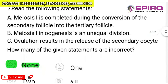Question 7: read statements A, B, and C. Meiosis I is completed during conversion of secondary follicle into tertiary follicle. Meiosis I in oogenesis is an unequal division. Ovulation results in the release of the secondary oocyte. How many statements are incorrect? The answer is none — all are correct. So you can opt for option A.